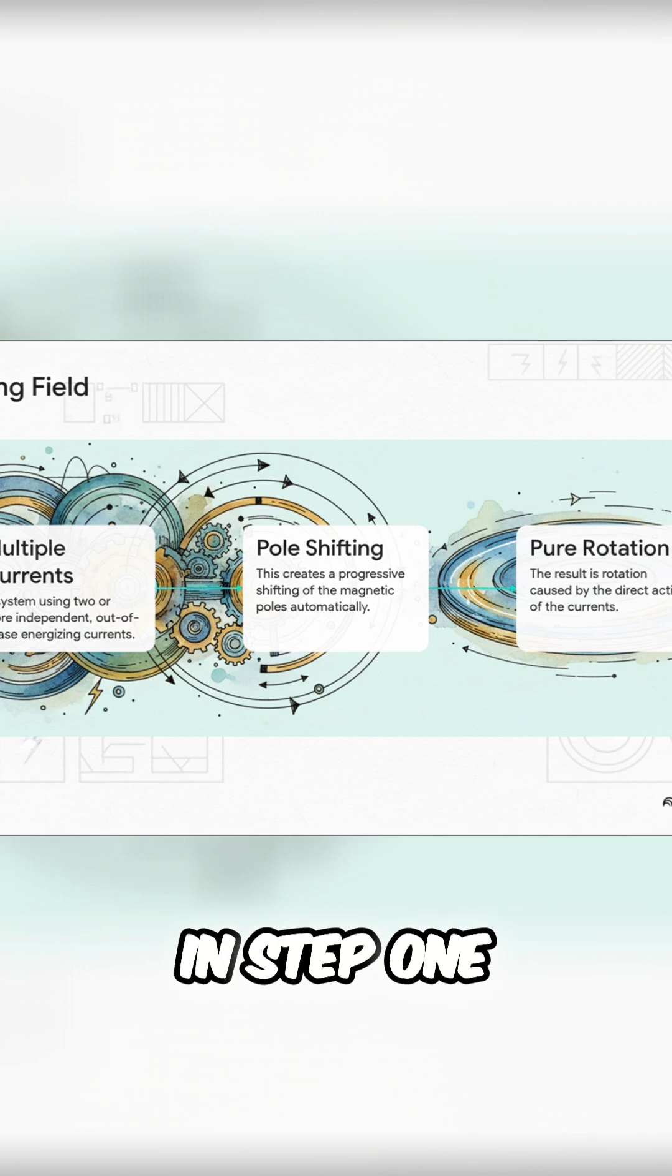So look here. In step 1, the first current creates a magnetic field pushing north-south. Then, in step 2, just as that one fades, the next current peaks, creating a field that's east-west.